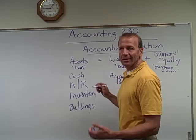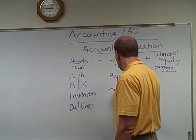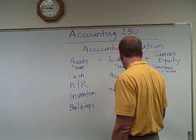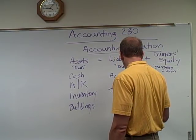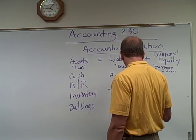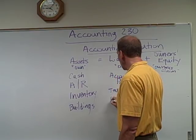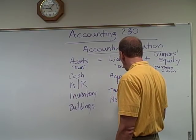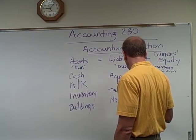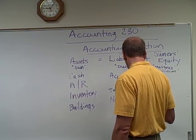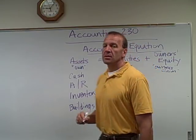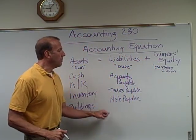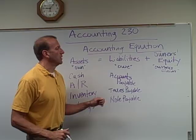Other liabilities would be such things as taxes payable. If we have a loan, we might have a loan or note payable. So these are all items that we owe money on.